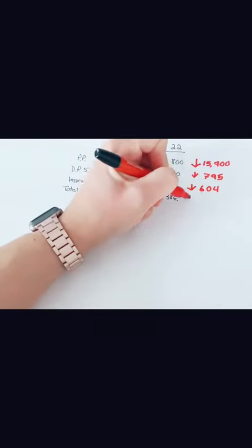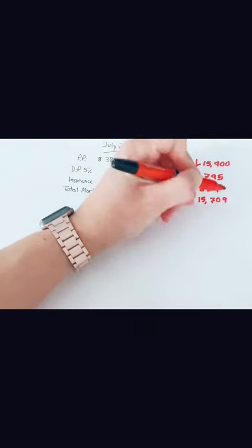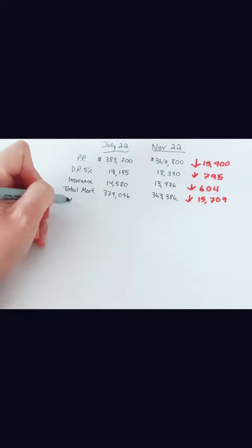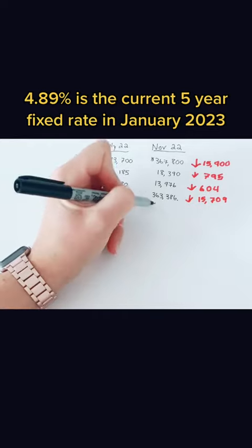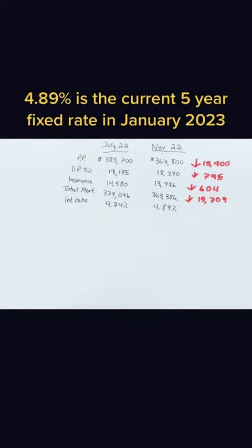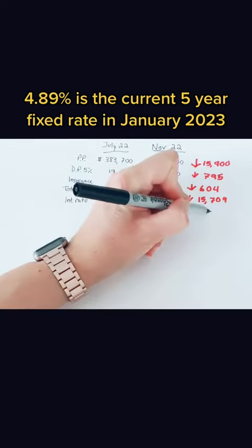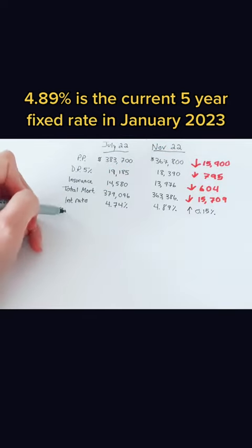Your total mortgage is down by $15,709. The interest rate back in July would have been 4.74%, and currently it's 4.89%, so 0.15% higher.